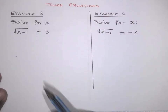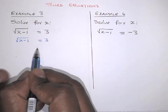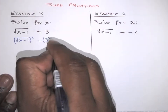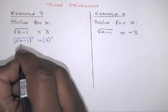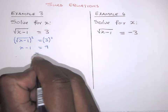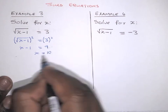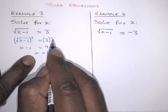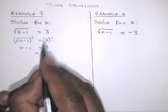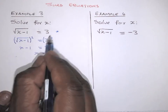To solve √(x − 1) = 3, rewrite the equation with the square root isolated on one side. Then square both sides: x − 1 = 9, so x = 10. Because we squared the equation, we must always check our answer by substituting back into the original equation.